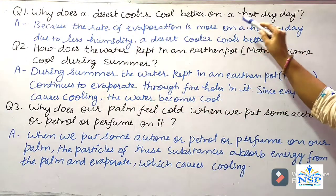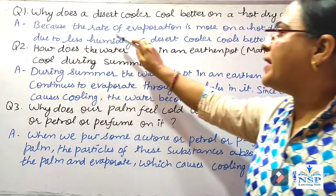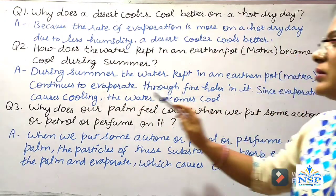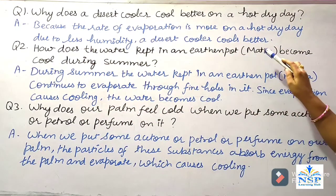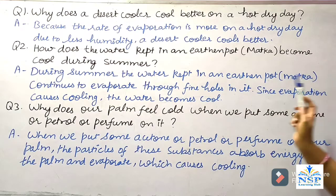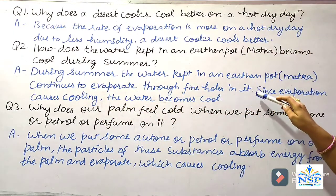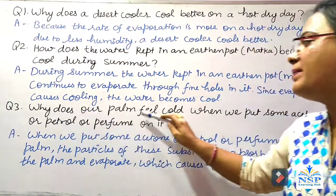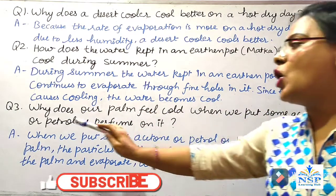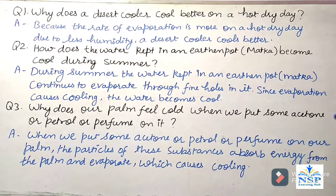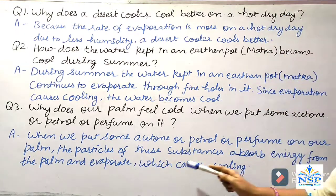Why does a desert cooler cool better on a hot dry day? Because the rate of evaporation is more on a hot dry day due to less humidity, a desert cooler cools better. How does water kept in an earthen pot become cool during summer? The water in the earthen pot continues to evaporate through fine holes in it; since evaporation causes cooling, the water becomes cold. Why does our palm feel cold when we put acetone, petrol or perfume on it? The particles of these substances absorb energy from the palm and evaporate, which causes cooling.